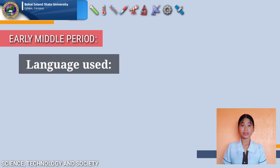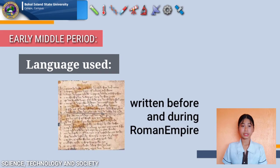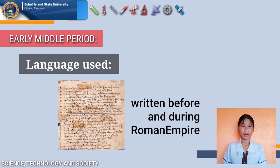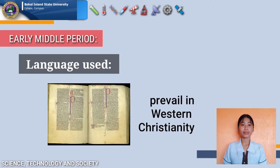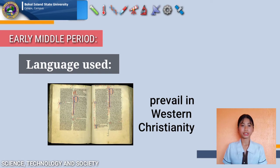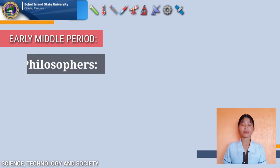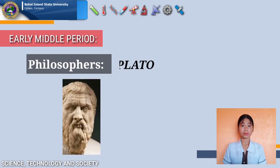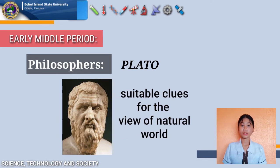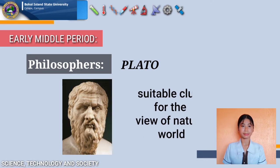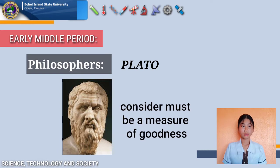Regarding the languages used in this period: Greek was written before and during the Roman Empire and was also used in the Middle Period, but was eventually lost. Latin prevailed in Western Christianity, but few books contained scientific subject matter. Among the philosophers of the Early Middle Period, Plato's works provided suitable clues for a view of the natural world within Christianity, considering that there must be a measure of goodness to identify God as benevolent and maintaining a standard of goodness independent of God.